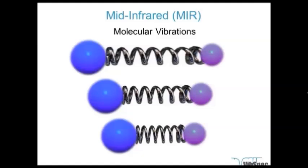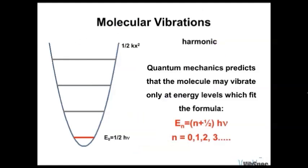You could see molecular vibrations as two atoms connected by a spring, constantly moving between extreme stretching and extreme compression. The frequency used by these molecules is on the order of 10^13 vibrations per second, which is very fast.